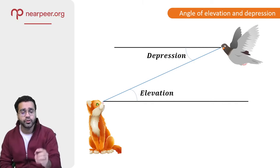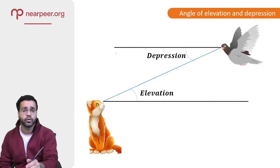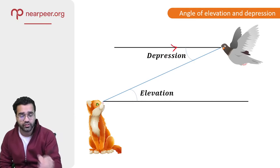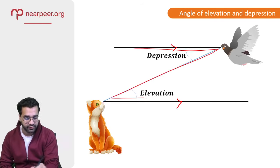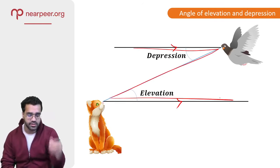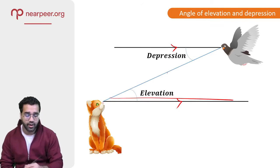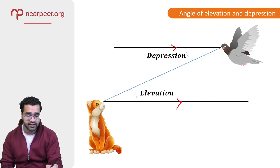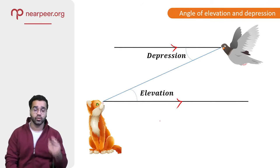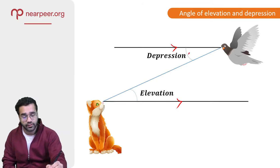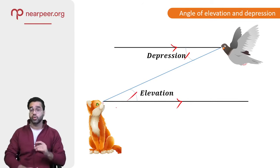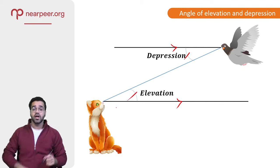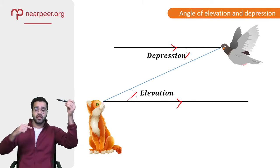One thing to note: these horizontal lines of sight are always going to be parallel, which means they form a Z-shape. A Z with parallel lines tells us these are alternate angles, which means the angle of depression is always going to be equal to the angle of elevation. This will always be the case when two objects are looking at each other — one at the top and one at the bottom.